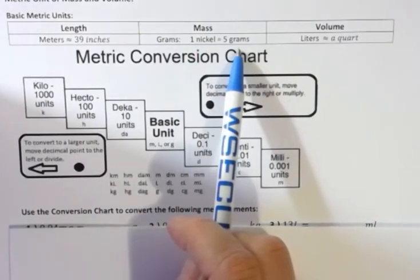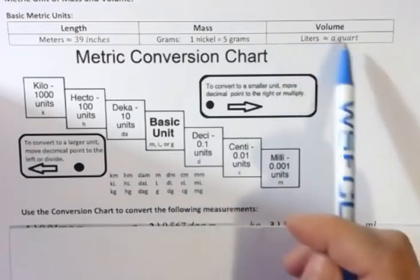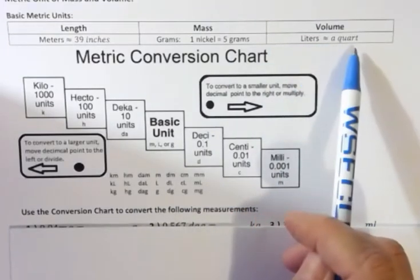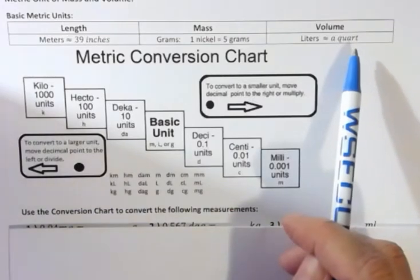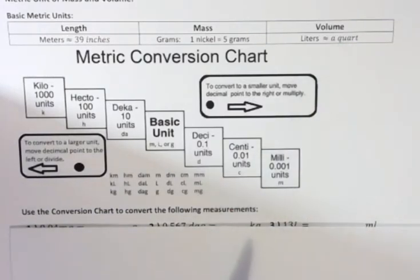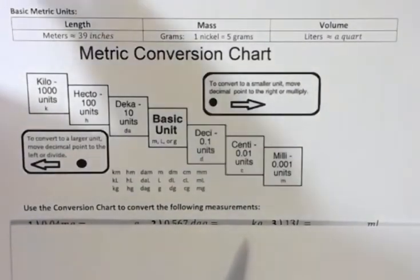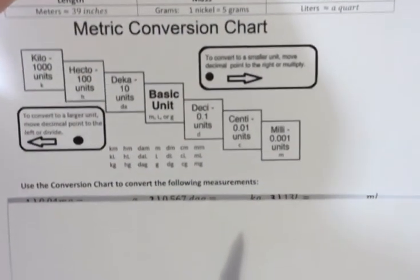Grams: if you think about the weight of a nickel, it's five grams, or a paper clip is about one gram. For a liter, it's about a quart, and you can probably visualize that because you've probably bought a liter or seen two liters of soda before. Again, the metric conversion chart we use in another video, so you should have seen this before.